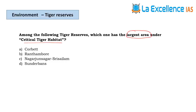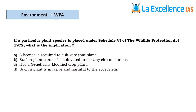The next question is about critical tiger habitat. When they ask about density, the answer is Corbett, but they are asking about largest area — so it is Nagarjunasagar Srisailam.